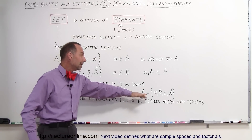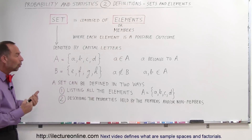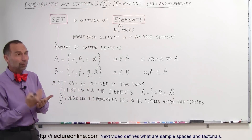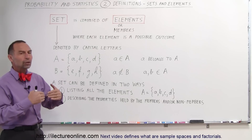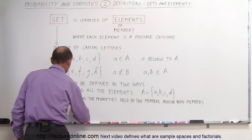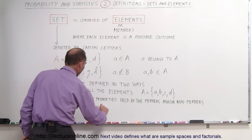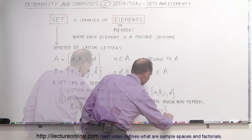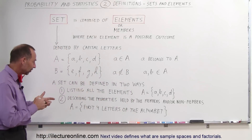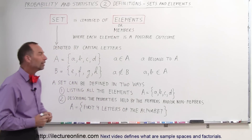Here we can indicate that this is set A and those are the elements in A — we can simply list them out. Or we can define the set by describing what the contents of A are, by the properties that they have. Maybe looking for all the even numbers, or something like that. In this case, one way to describe A is: A is equal to the first four letters of the alphabet. So the elements in A are simply the first four letters of the alphabet, and everybody would then know that it means a, b, c, and d. Those are the different ways to describe a set.